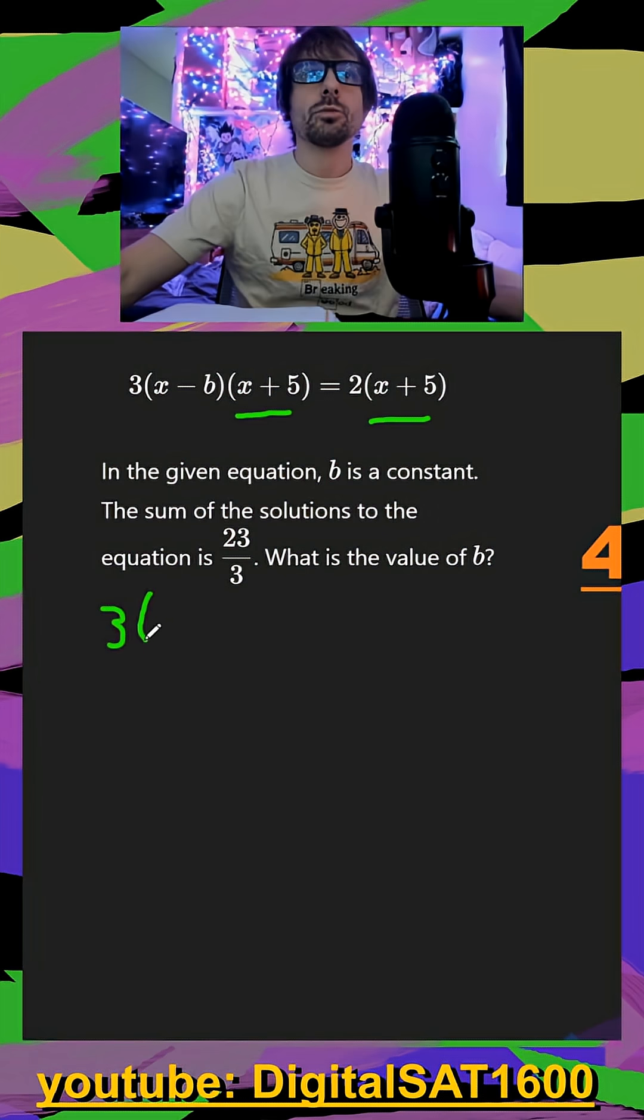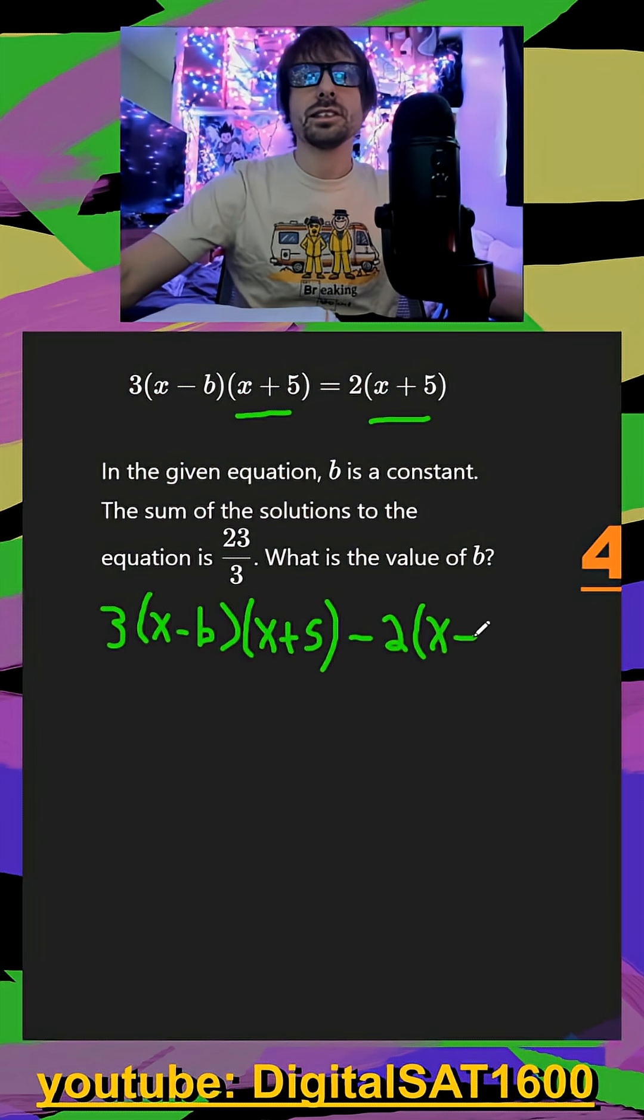Down below, we have three times x minus b, that's times x plus five. And then I subtract over the two times x plus five. And now everything's equal to zero.